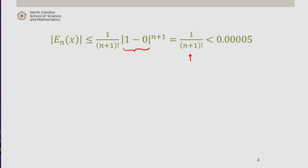Another way to think about this is to identify a value of n such that n plus 1 factorial is greater than 20,000. Since n represents a degree of a polynomial, we will test only whole numbers for n. Pause this video and test some values out.